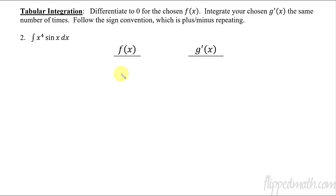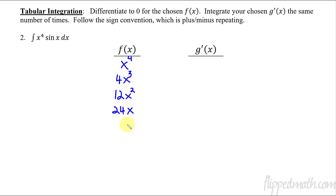So when you have something that's going to take lots and lots of integration by parts steps, tabular integration can speed it up for you. It organizes everything and speeds it up. We identify our f and g prime. We want something for f that gets simpler when we differentiate — so x to the fourth is our f. We differentiate it until we get to zero: x⁴, then 4x³, then 12x², then 24x, then 24, then zero. For g prime we have sine x, and we integrate the same number of times.